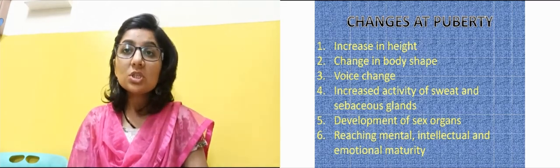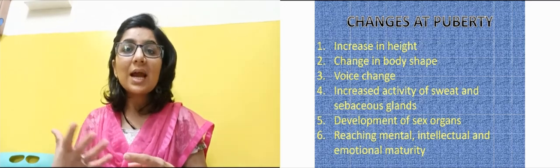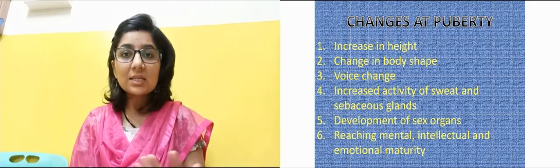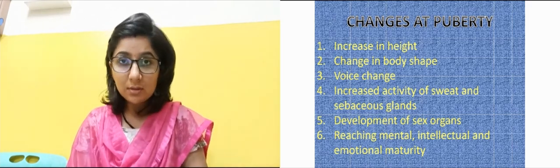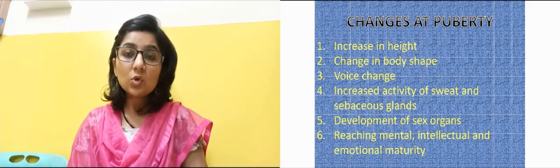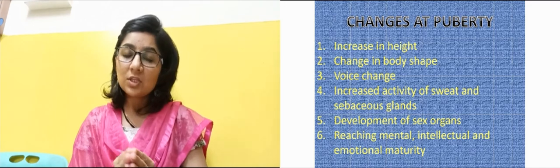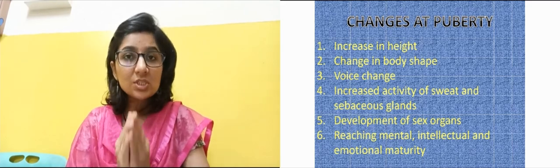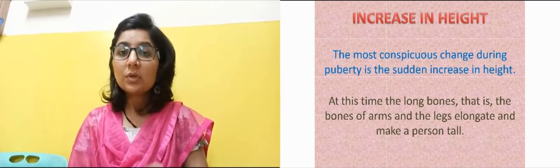There are many changes which take place in the body during puberty: increase in height, change in body shape, voice changes, increased activity of glands like sweat glands and sebaceous glands, development of sex organs, and reaching mental, intellectual, and emotional maturity.